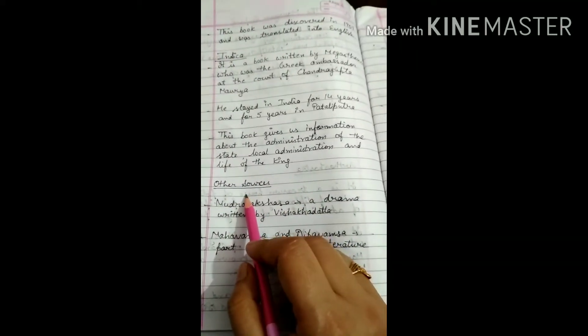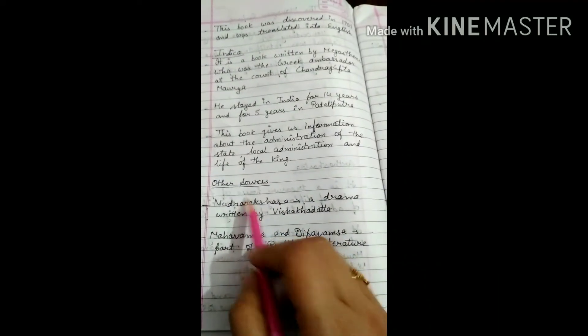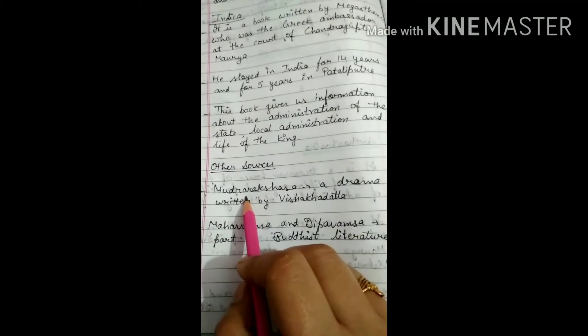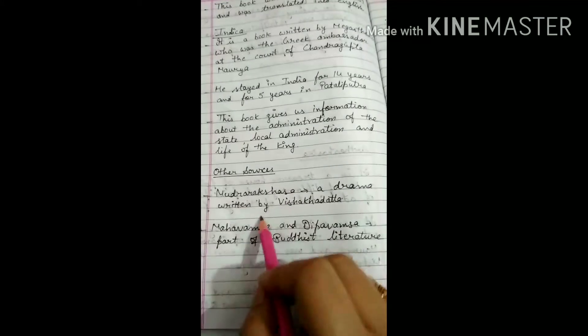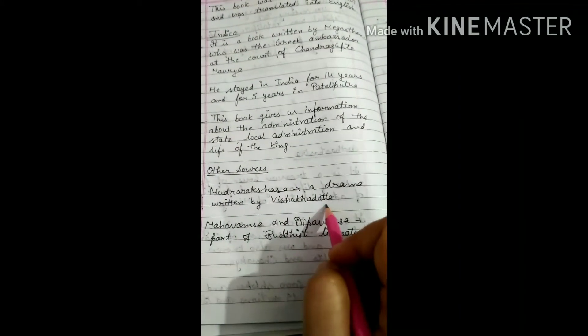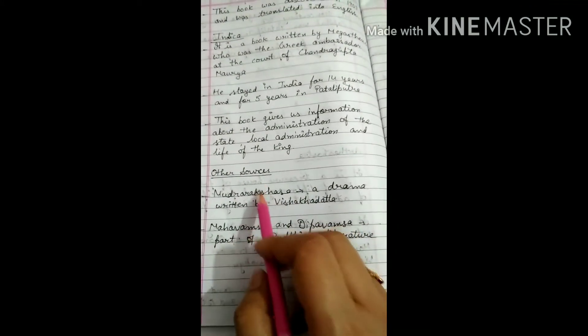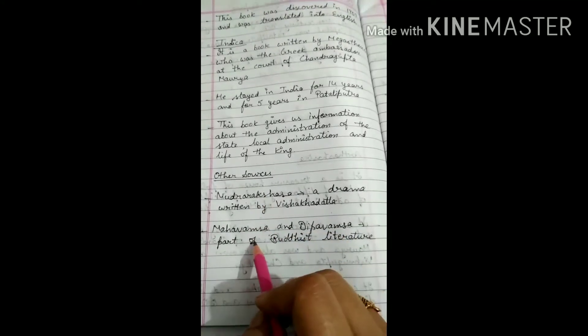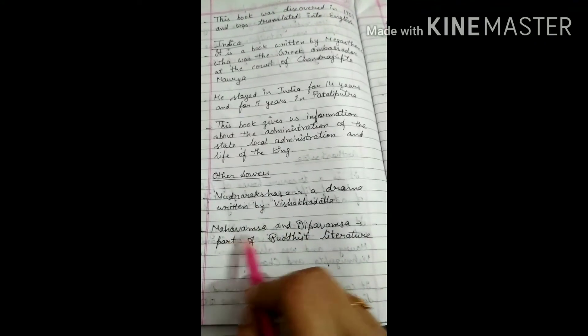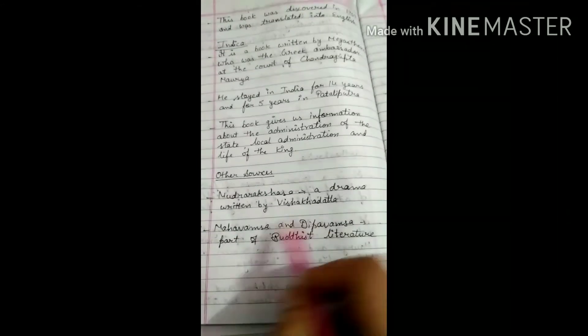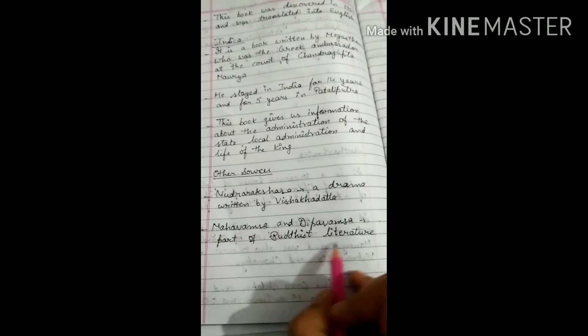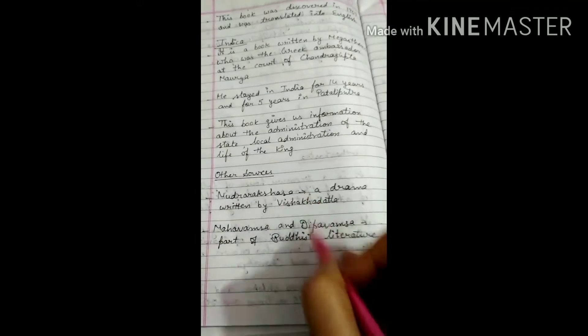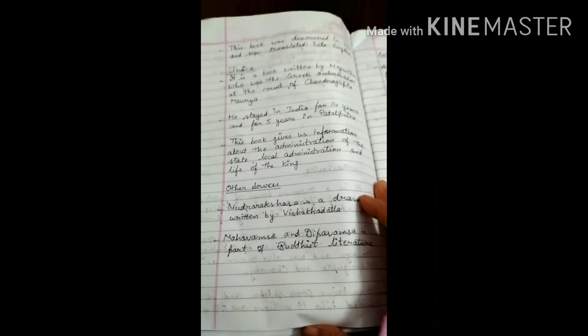Other sources of literary information are Mudra Rakshasa, another source of information about the Mauryan Empire. Second is the Mahavamsa and Deepvamsa. Mahavamsa and Deepvamsa are part of the Buddhist literature. These are the other sources of information.